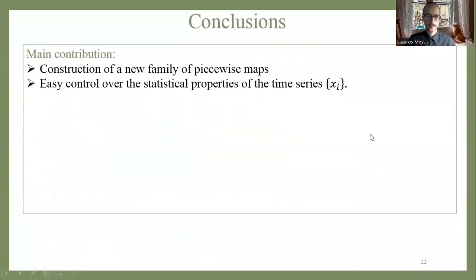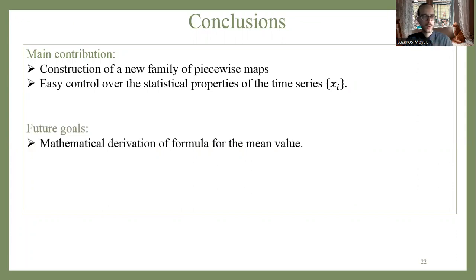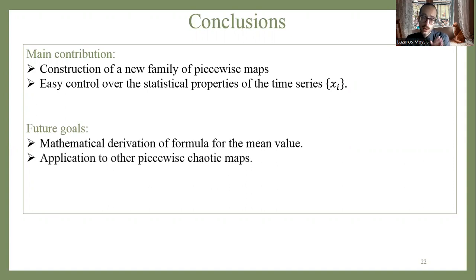So what have we done so far? We have constructed a new family of piecewise maps — a very wide family — where we can easily control the statistical properties of the time series. It is very easy to tune a parameter and change the mean value. From both a mathematical and dynamical systems perspective this is a very good result, regardless of the application.